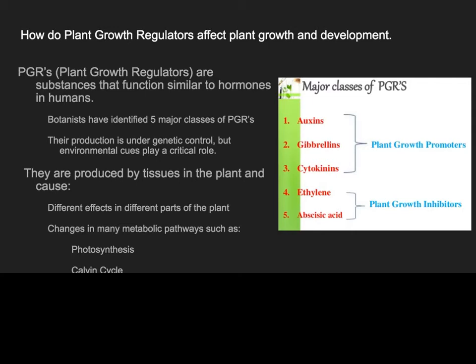A PGR is a plant growth regulator — something that regulates how a plant grows. PGRs are substances that function similar to how hormones work in humans. Just as a human goes through puberty — males releasing testosterone, females releasing estrogen — causing growth and development, a similar process happens in plants. We have five major classes of PGRs: plant growth promoters or stimulators, and plant growth inhibitors.